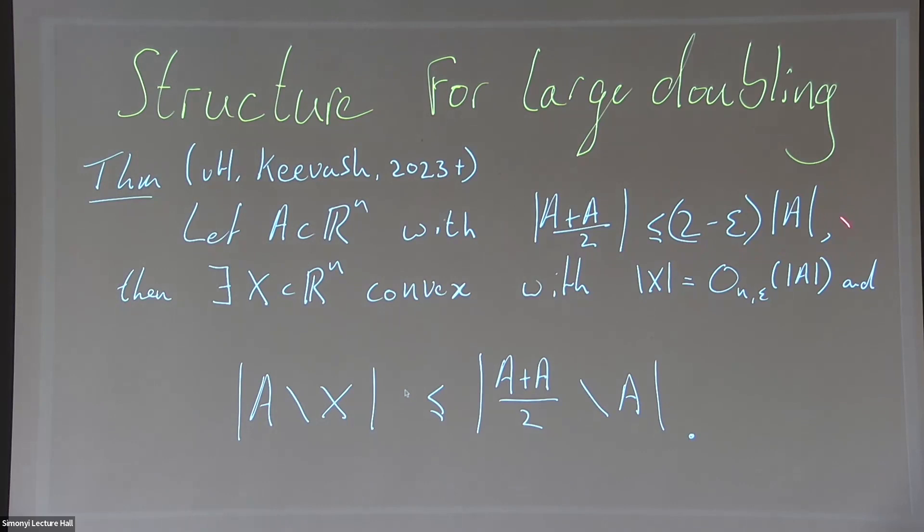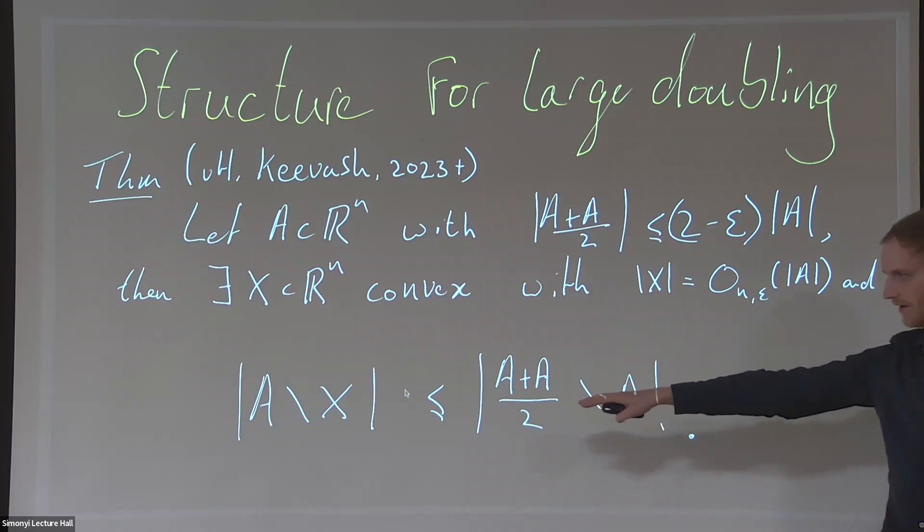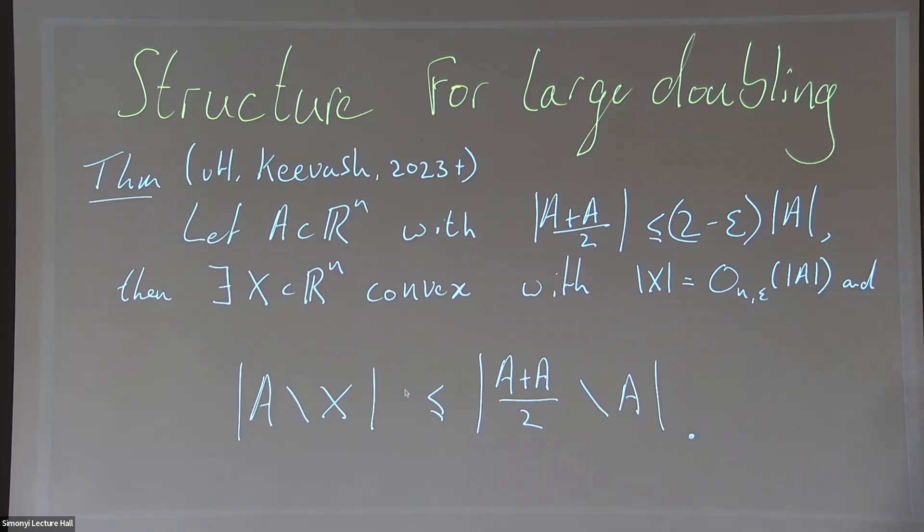The result says: if my doubling is bounded away from two, I can find a convex set of bounded size that covers almost all of A. A single convex set that covers almost all of A. The constant here is one—before we had a constant that depended on dimension, here it doesn't. As epsilon tends to zero, this is actually a sharp result. Let me end there.